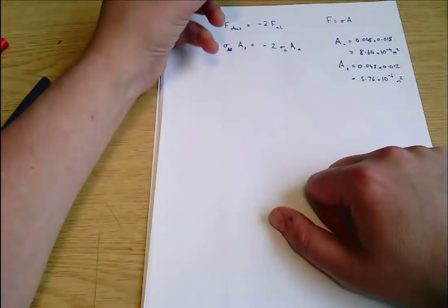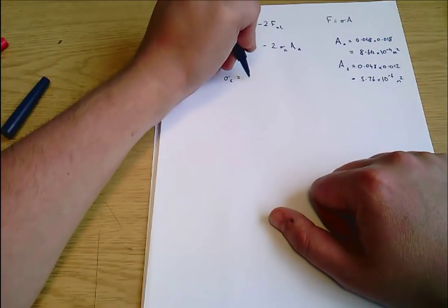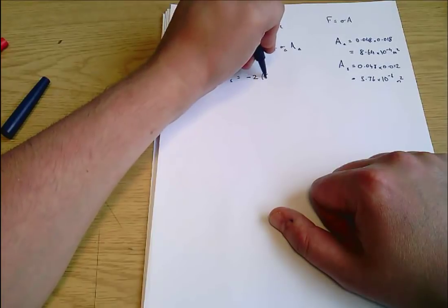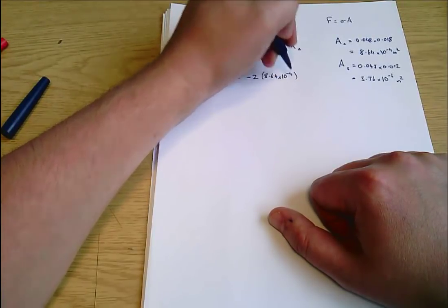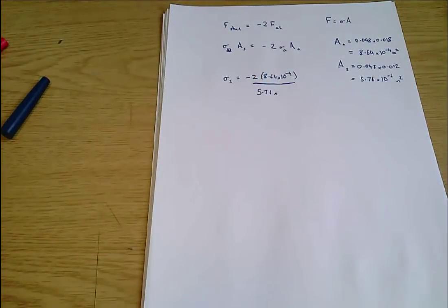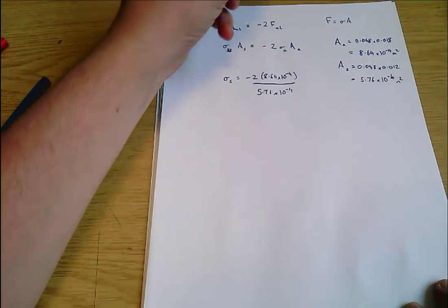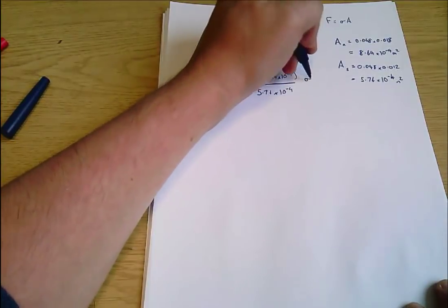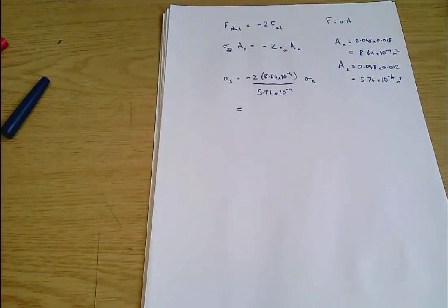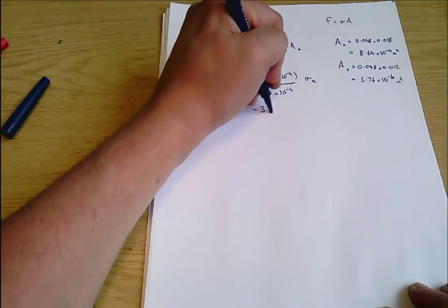Substituting those areas in, sigma_steel equals negative 2 times 8.64 times 10⁻⁴ divided by 5.76 times 10⁻⁴, all multiplied by sigma_aluminium, which gives sigma_steel equals minus 3 times sigma_aluminium.